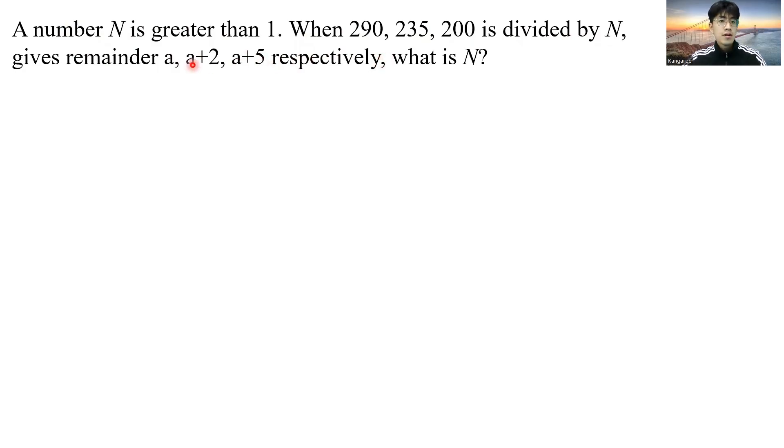First of all, we see I have three different remainders here, which make this question a bit complicated. So let us start with a simple example first. If I have 28, 33, 48, when divided by N, they all give remainder 3. But then the quotients here are different, which are unknown. How do you find out N?